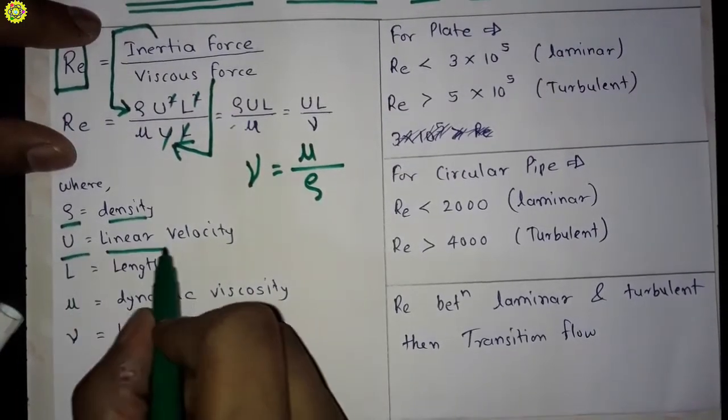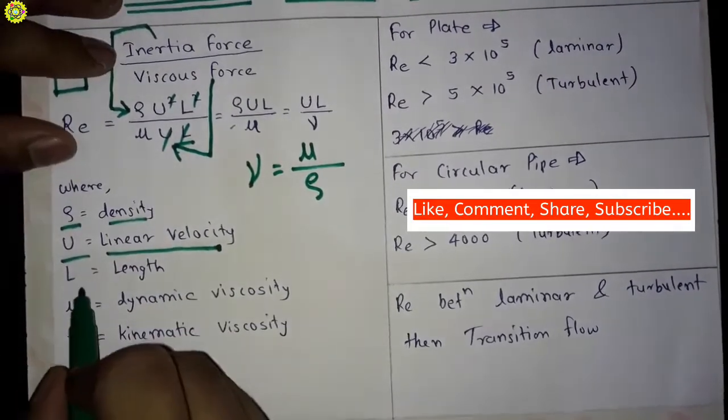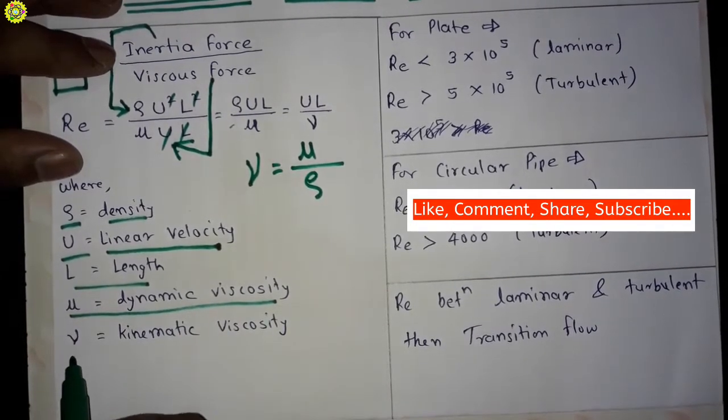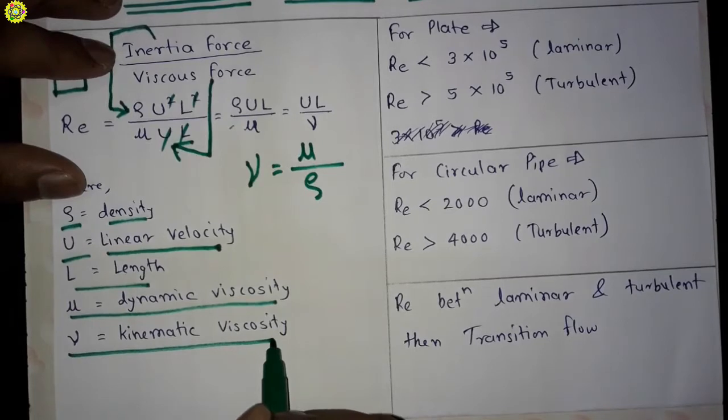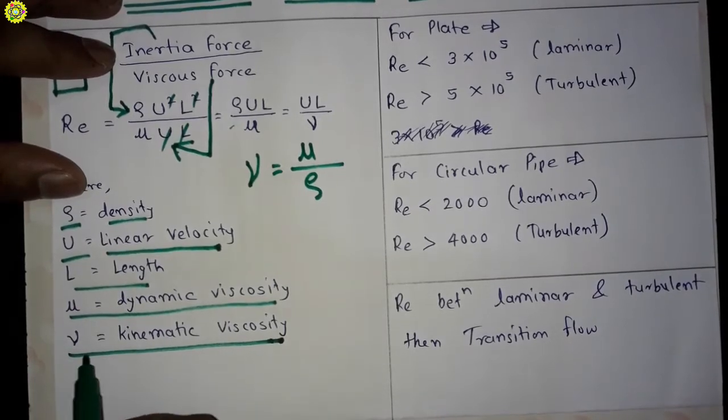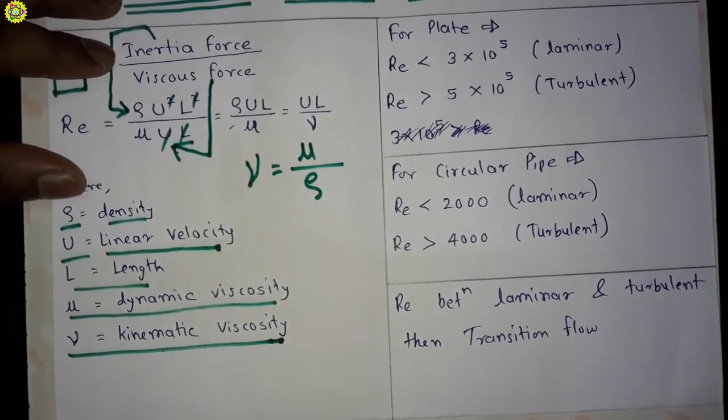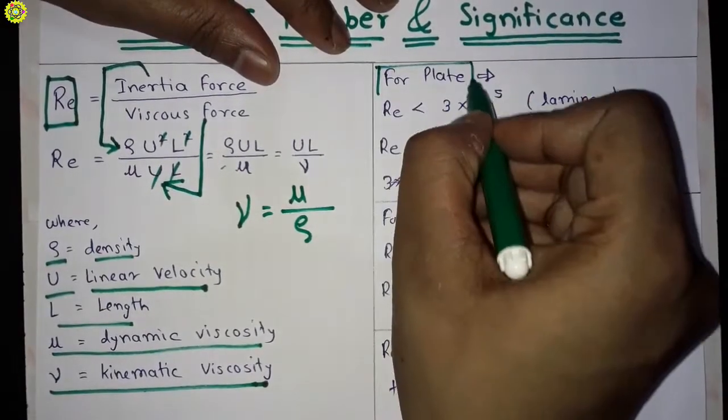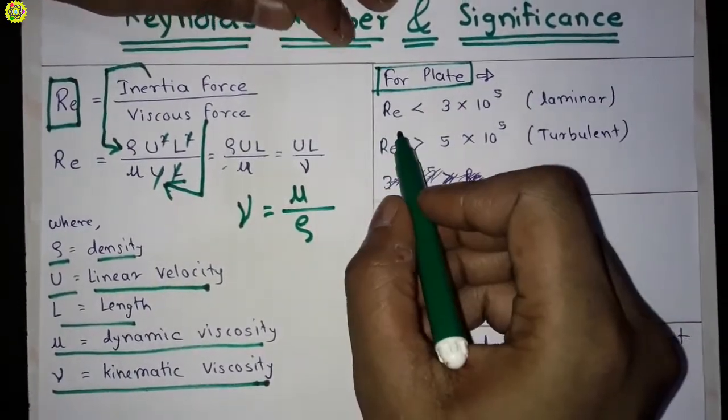Mu is the dynamic viscosity and nu is the kinematic viscosity. Now for plate, if Reynolds number is less than 3 times 10 to the power 5, then it is laminar flow.